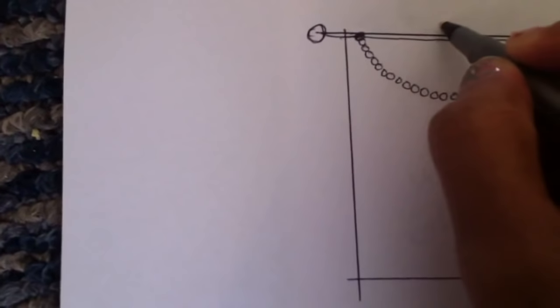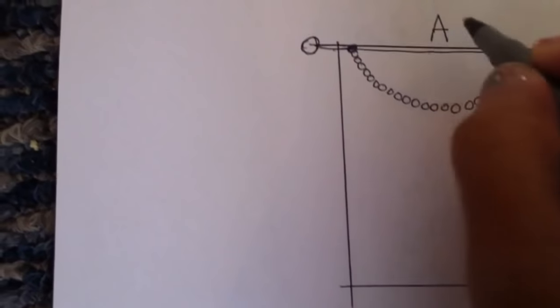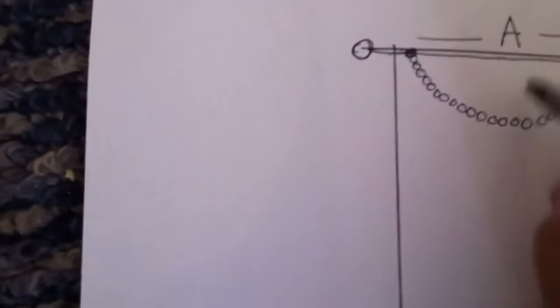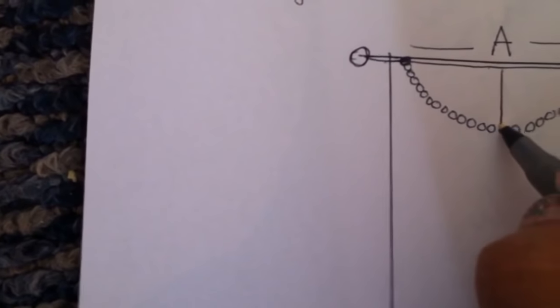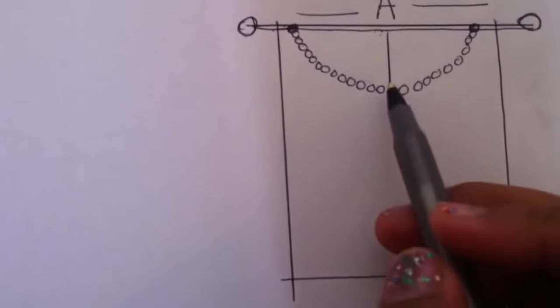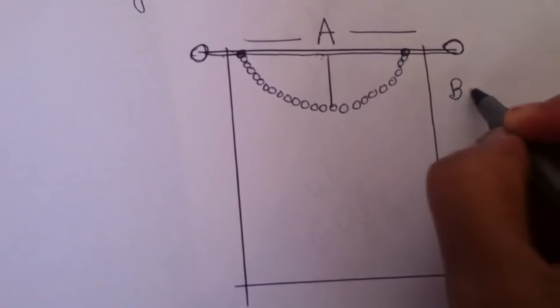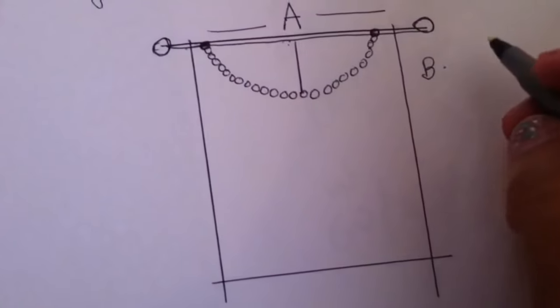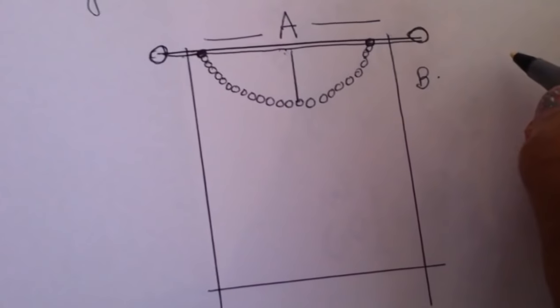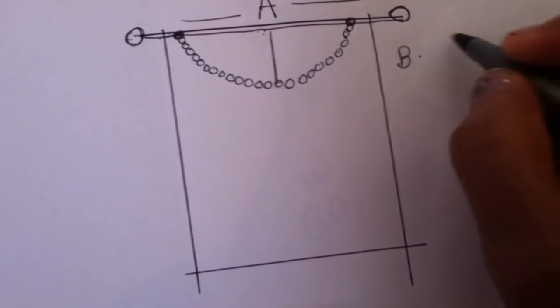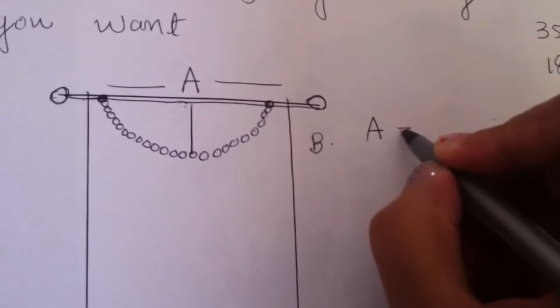So as I said earlier, the width is going to be A, and this is the depth of the swag we need, which we marked earlier as B. And mine is going to be A - that is the total width.